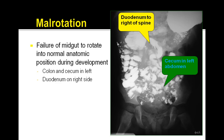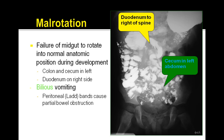Malrotation mainly results from a failure of the midgut to rotate into its normal anatomic position during development. The colon and cecum are typically on the left, as you can see on this image study, and you have the duodenum to the right of the spine.